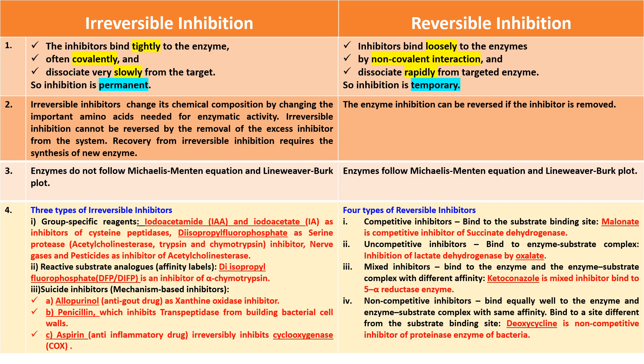Whereas, there are four types of reversible inhibitors: competitive inhibitors, uncompetitive inhibitors, mixed inhibitors, and non-competitive inhibitors. Competitive inhibitors bind to the substrate binding site. An example is malonate as a competitive inhibitor of succinate dehydrogenase.